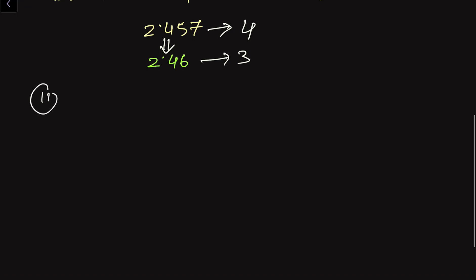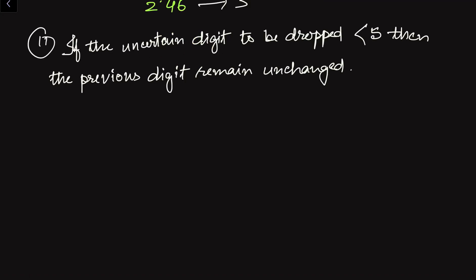In the second case, if the uncertain digit to be dropped is less than 5, then the preceding digit remains unchanged. So if the digit we want to drop is less than 5, we keep the previous digit unchanged — it remains unchanged.